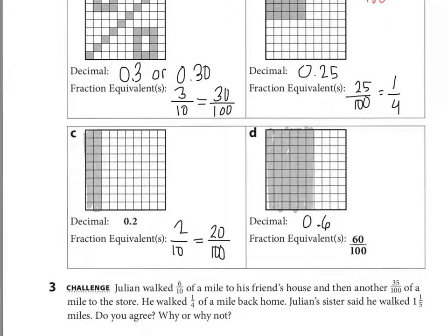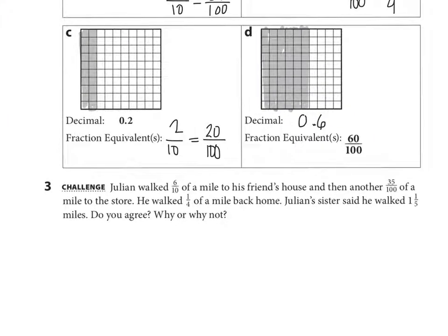And let's look at the challenge problem. It says, Julian walked six-tenths of a mile to his friend's house and then another thirty-five hundredths of a mile to the store. He walked one-fourth of a mile back home. Julian's sister said he walked one and one-fifth miles. Do you agree? Why or why not? So we're taking six-tenths plus thirty-five hundredths plus one-fourth.